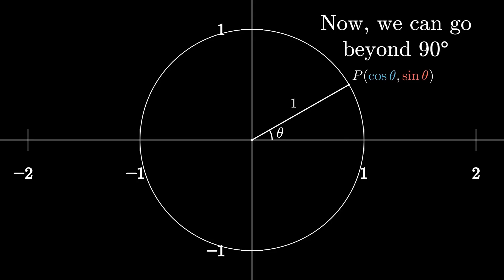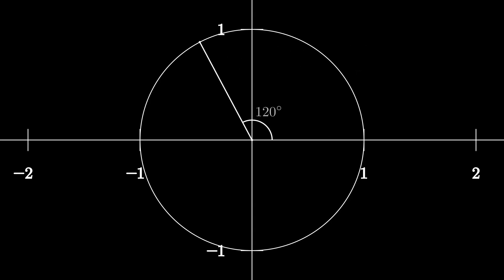We can now define sine and cosine for any angle. For example, at 120 degrees the coordinate of the point is cosine 120 degrees comma sine 120 degrees.